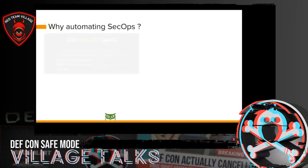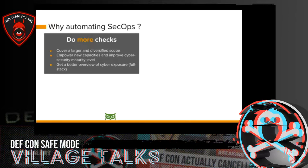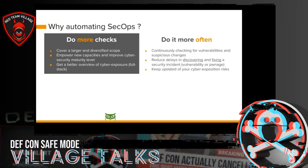What does automating SecOps bring? From a defensive point of view, the first thing is to do more checks — to cover a larger and more diversified scope, cover a bigger perimeter of assets, and make more controls on each stack. The second thing is to do it more often, enabling continuous checks, which is very useful to reduce the window of exposure and reduce the delay in discovering and fixing a security incident.